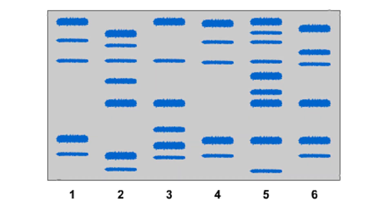Now consider this imaginary gel. The first lane contains DNA from a hair found at a crime scene. The other lanes contain DNA from five suspects.